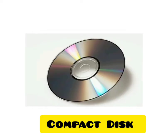Now this is a compact disk or CD. It is an optical disk. It stores information. This information can be read from the disk by light. The storage capacity of a disk is 700 MB.